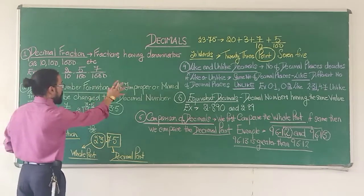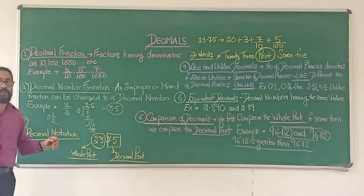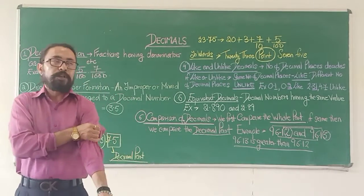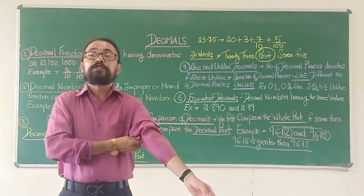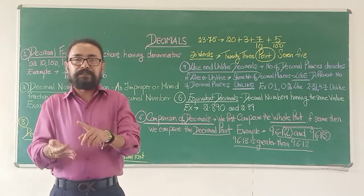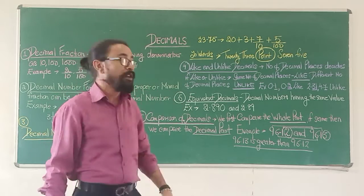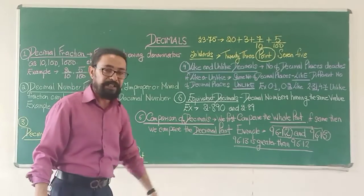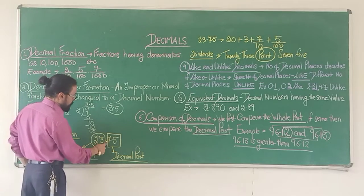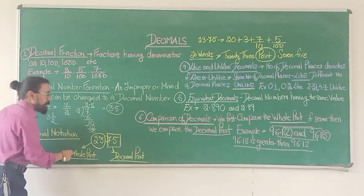This is how a decimal number formation takes place. Let's come to decimal notation. What notation do I follow when I am using a decimal number? Notation is numeration. Our numerations are units, tens, hundreds, thousands, ten thousands, lakhs, ten lakhs, crores, ten crores. What happens when it is a decimal number? The decimal number has two parts. Take 23.75 — this 23 represents the whole part. It is a perfect number: 2 has been multiplied by 10 and 3 by 1 to give 23.